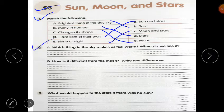Question number two. Which thing in the sky makes us feel warm? Kaun si thing hai sky mein jo hamein warm feel karati hai? Yes, sun. Sun in the sky makes us feel warm. When do we see it? We see it in the day sky. Hum isko din ke time pe dekh sakte hai. Clear?